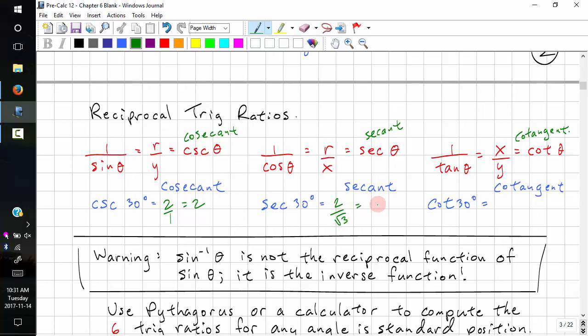If you wanted to rationalize this, this would be 2 root 3 over 3, but we don't normally do this. This is more complicated to look at than this. Cotangent theta. Tangent theta is 1 over root 3, so cotangent is root 3 over 1, and this we do simplify to root 3.